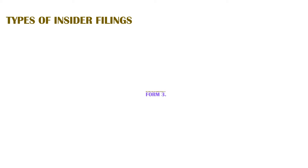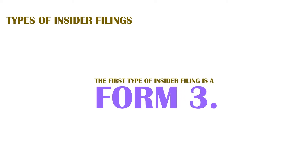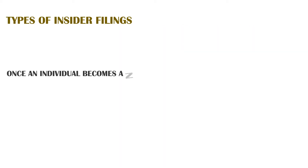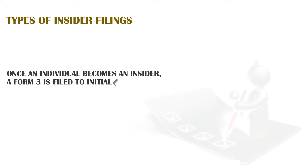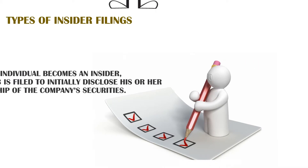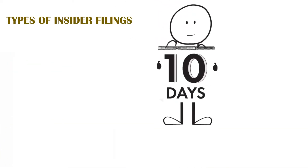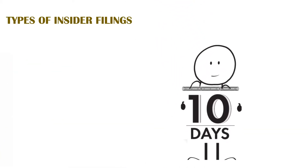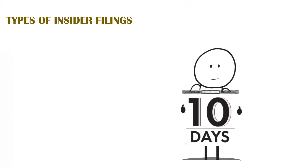The first type of insider filing is a Form 3. Once an individual becomes an insider, a Form 3 is filed to initially disclose his or her ownership of a company's securities. A Form 3 must be filed within 10 days after the person becomes an insider.